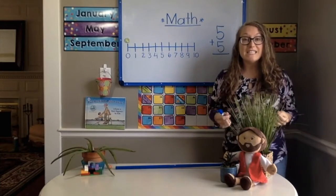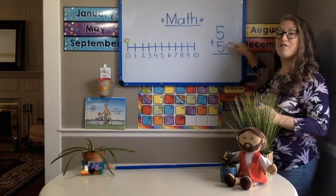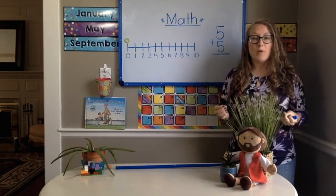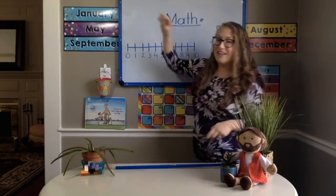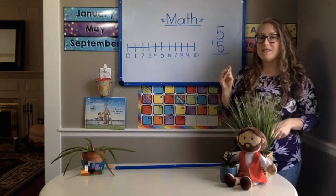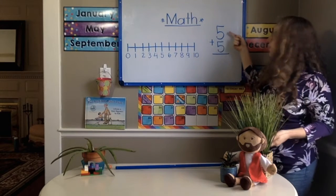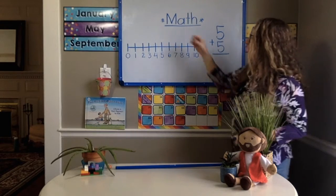Alright, kindergarten. Your next addition sentence today says 5 plus 5. What is the number that I'm going to put my piece on first? Which number? Number 5. My first number in my addition problem is 5. So I'm going to put my piece on the number 5.